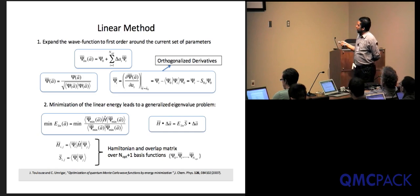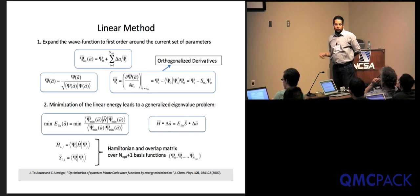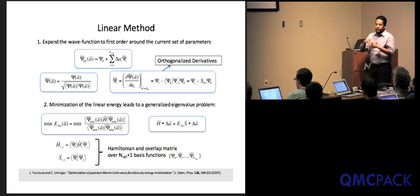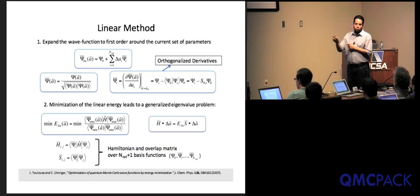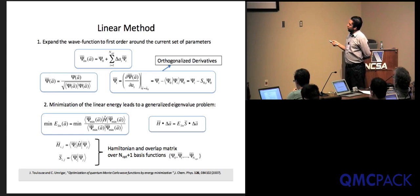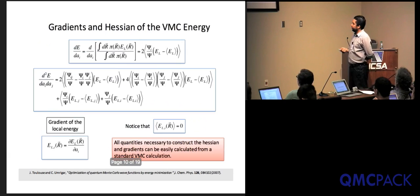Solving this eigenvalue problem gives the direction in parameter space that minimizes the energy within this subspace. This is only accurate in the neighborhood of your current location since the problem is highly nonlinear. The big benefit is that this method converges close to quadratically without requiring Hessians. The only quantities evaluated are matrix elements of the Hamiltonian among first-order derivatives of the wave function — different from taking second-order derivatives of the Hamiltonian itself.